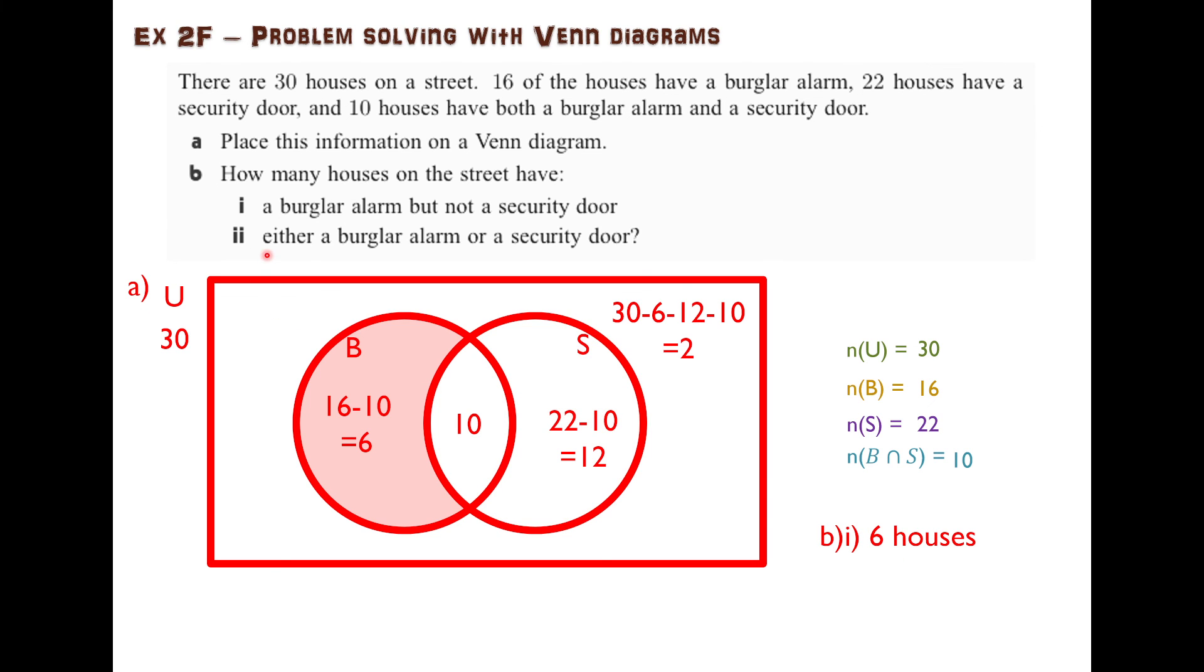How many have either a burglar alarm or a security door? We'll assume that means either burglar or security or both. So that's six plus 10 plus 12 which is 28 houses. When you see the word OR in maths, OR usually means one or the other or both.